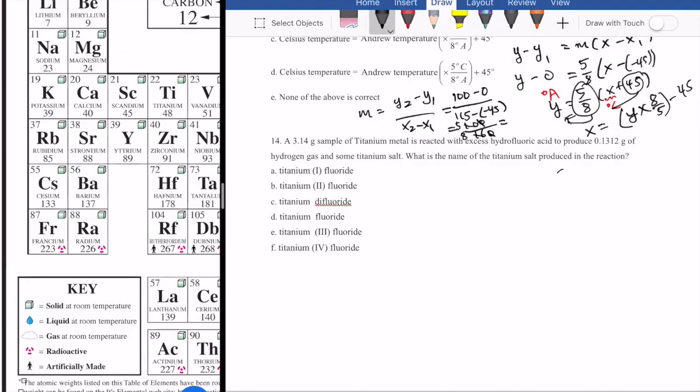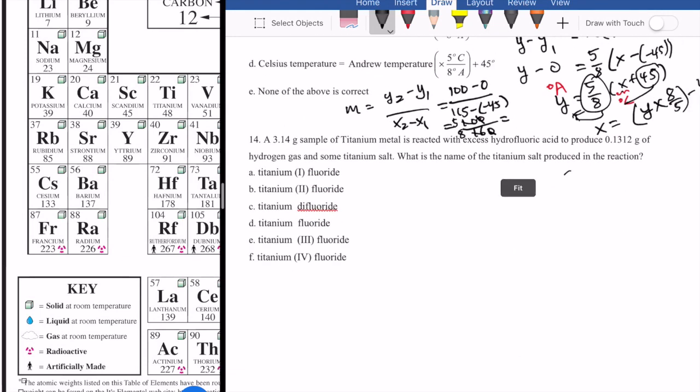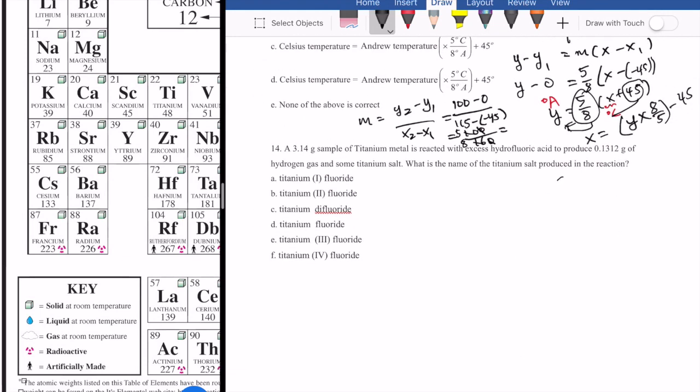Let's take a look at number 14 in sample exam 1, Chem 11. This is a difficult question because it asks you to assign the identity of the titanium salt produced in this reaction. Let's write that down: the reaction is titanium metal plus hydrofluoric acid.